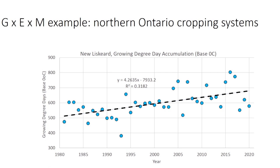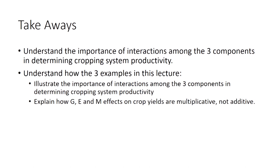The takeaway is that you should now understand the G by E by M framework for analyzing cropping systems, know the high-level summary of these three examples — the green revolution, crop rotation and nitrogen, and northern Ontario expansion — to illustrate how to use G by E by M, and understand that we care more about the interactions than just the individual components themselves, because it's often in these interactions where we can actually explain agricultural productivity and cropping system performance.